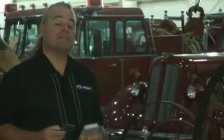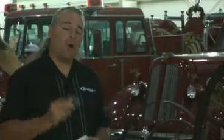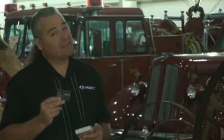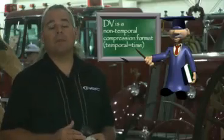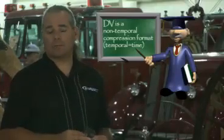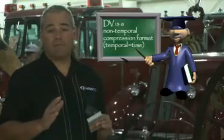HDV records to mini-DV tape just like you're already used to using. However, the data that goes down to this tape is different than what you're used to in the DV world. DV uses a non-temporal compression scheme where every frame is a frame. DV has a bit rate of approximately 25 megabits per second or 13 gigabytes per hour. So there are some differences.